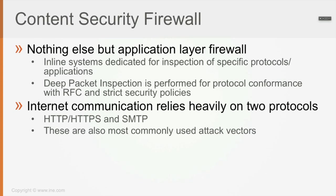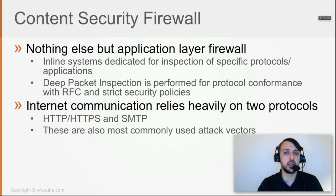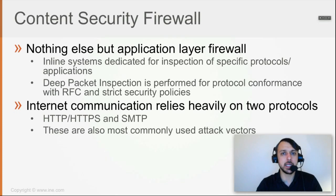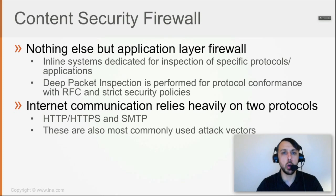As internet communication heavily relies on two protocols — HTTP or HTTPS and SMTP — those are the most commonly used attack vectors. If an attacker cannot gain physical access to the network, then in order to infect endpoints, look around, and try to leak sensitive data, the attacker has to put malware into the network remotely. Since most companies allow users to browse the internet over HTTP/HTTPS and send emails, most attacks happen over web or email.